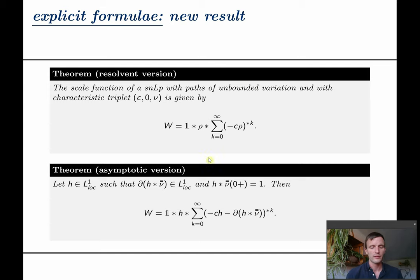As finding resolvents is no trivial task one may find this next asymptotic version of our main theorem quite useful. Instead of ρ we require here a function h for which only the limit of its convolution with double bar ν in zero equals one not everywhere, and then W is given by this expression μ.